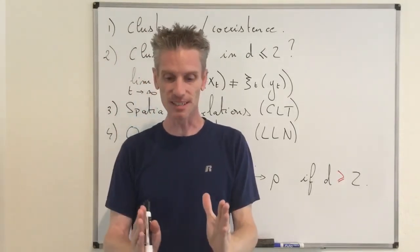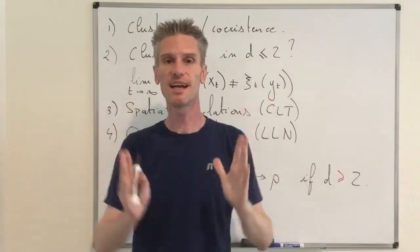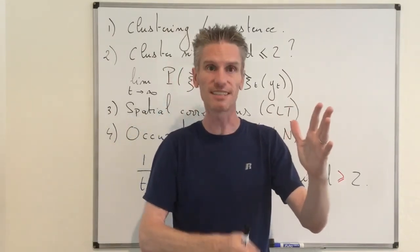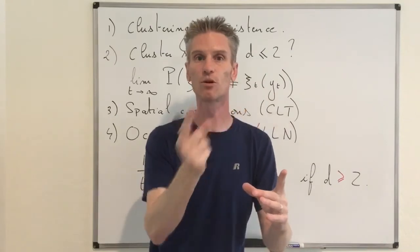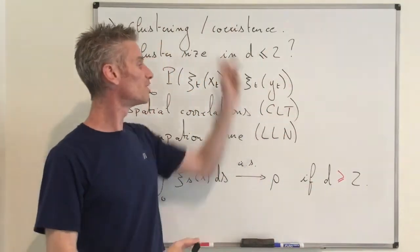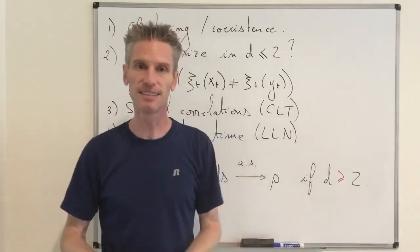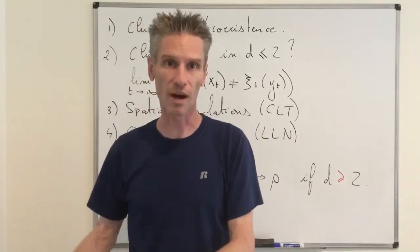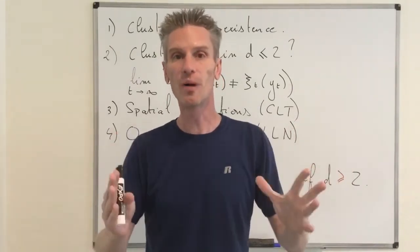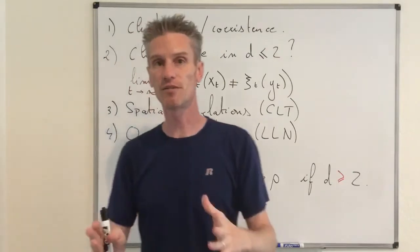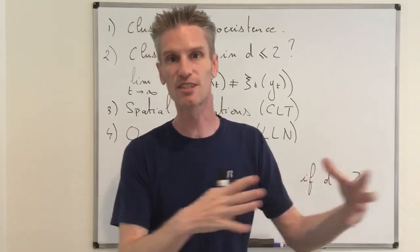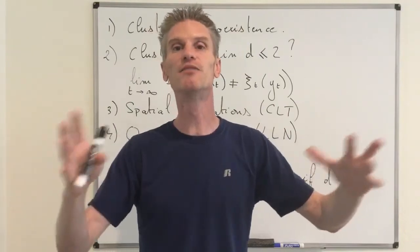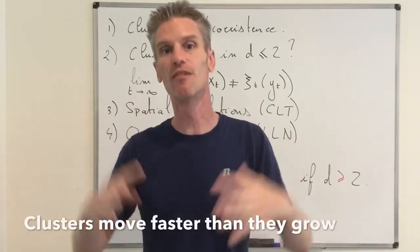In one dimension the law of large numbers is not true, but you still have fluctuation — you switch back and forth from 0 to 1, just not often enough for convergence. This seems counterintuitive with clustering: if clusters keep growing, how can a fixed site keep switching? The combination of all these results tells us that for the voter model in two and even one dimension, clusters keep growing forever but they also move around, and they move faster than they grow.